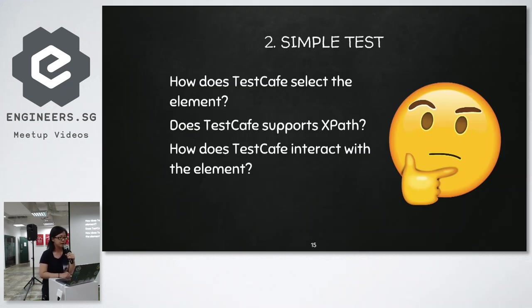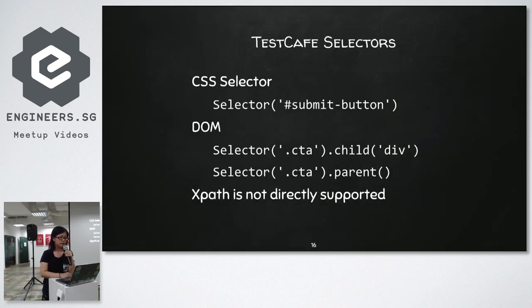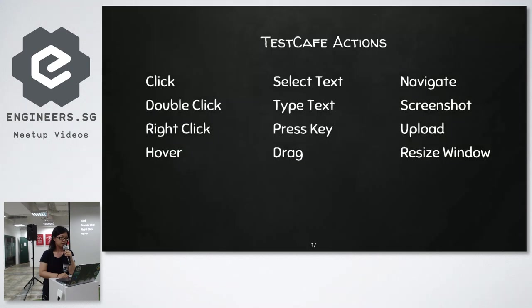The next objective was to create a simple test. My questions were: how does TestCafe select elements? Does it support XPath, which I'm more used to? And how does TestCafe interact with elements? After research, I found TestCafe supports CSS selectors and the DOM API. XPath is not directly supported but is accessible via the DOM API. Actions are quite feature-rich — click, double-click, hover — and I really liked the file upload feature support.